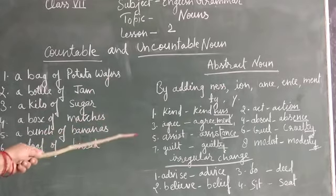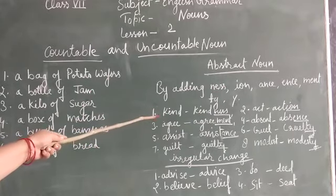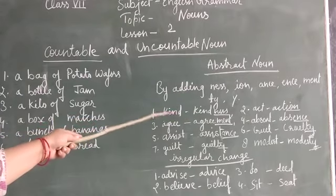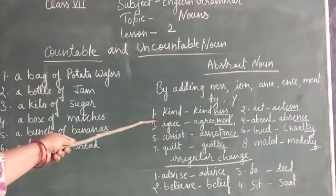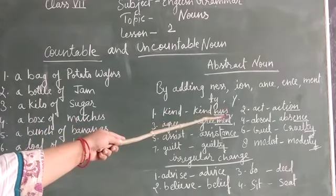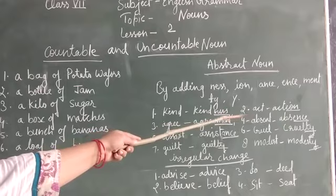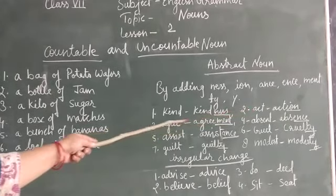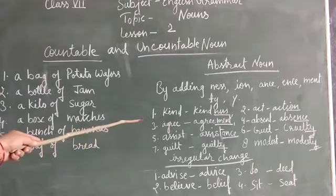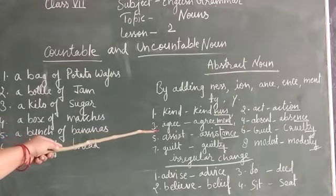For example, 'kind' — if you add the suffix -ness, it becomes 'kindness.' See 'act' — if we use -ion, it becomes 'action.' Here 'agree' — if we add -ment, it becomes 'agreement.'